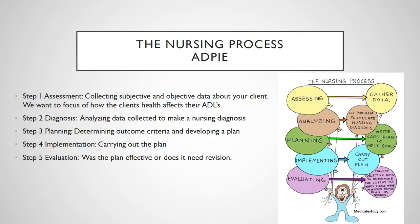When we're assessing, we're gathering subjective and objective data about the client. We really want to focus on how the client's health is affected by their daily living — for example, does their gait or being in a wheelchair prevent them from having complete control over their ADLs? The diagnosis step is where you analyze the data collected to make your nursing diagnosis — identifying the problem and formulating your nursing diagnosis, focusing on what we can do to help the patient in their daily living. Then step three is planning, where we write a plan of care for the patient and determine outcomes and criteria.